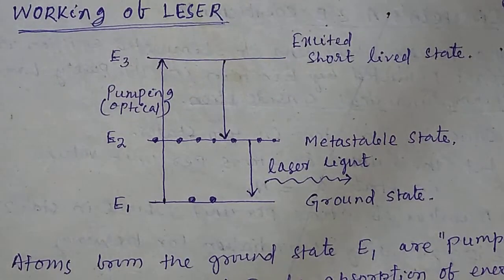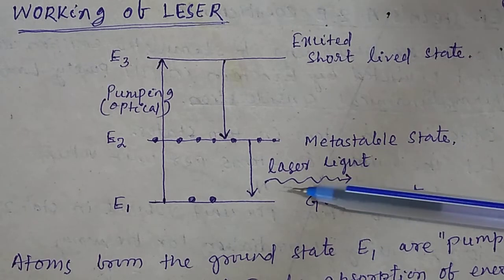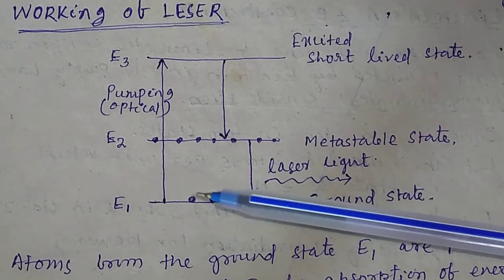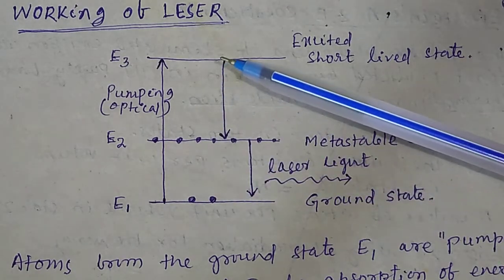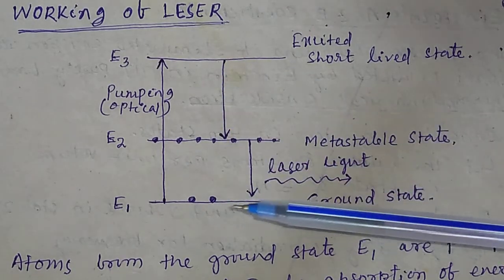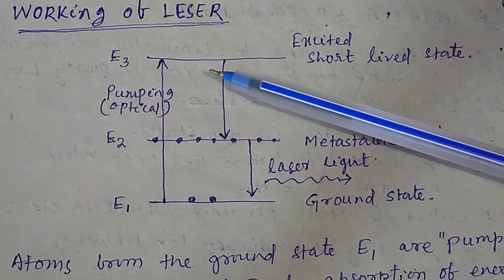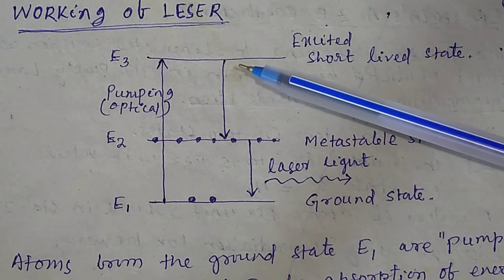Now we will discuss how optical pumping is done using a three-level laser, or the working of a three-level laser. This is the basic diagram for the working of a three-level laser. There are three energy levels: E1, E2, and E3. E1 is the ground state, E2 is the metastable state, and E3 is the excited state — also called the short-lived excited state.